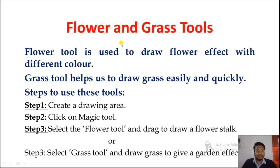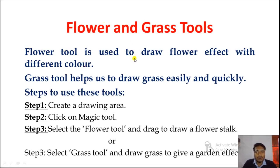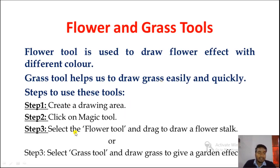First we have the Flower and Grass tools. The Flower tool is used to draw a flower effect with different colors, which we can change according to our desire — it helps us to draw a flower effect on our canvas. The Grass tool helps us to draw grass easily and quickly, giving an effect like grass on our canvas.